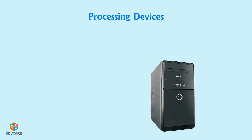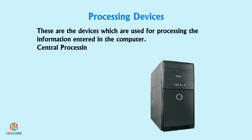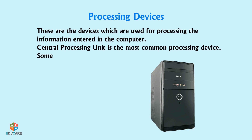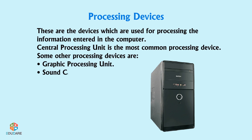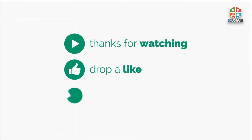Processing devices are the devices used for processing the information entered in the computer. The Central Processing Unit (CPU) is the most common processing device. Some other processing devices are the Graphics Processing Unit, Sound card, and Motherboard.